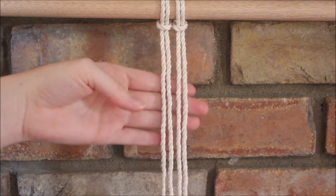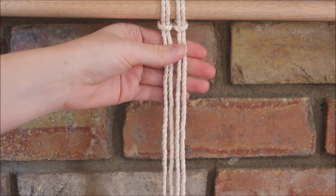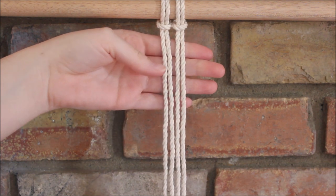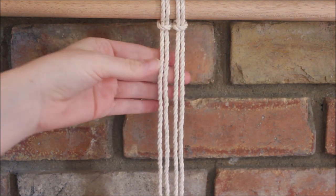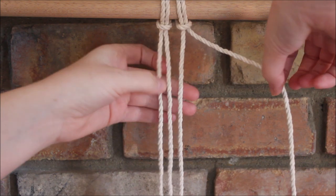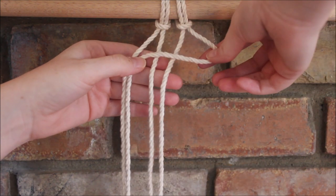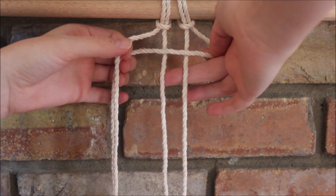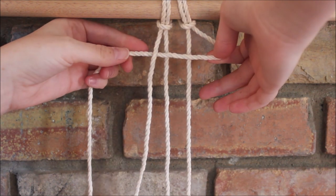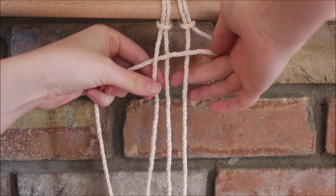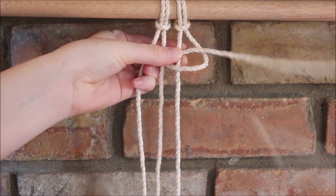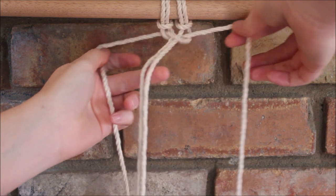To begin, I'm going to attach two ropes to a dowel rod using a lark's head knot. With these, I'm going to tie half of a square knot. To do this, I'm going to take the cord on the far right and cross it over the two cords in the middle to form a loop. Then I'm going to take that string on the far left to go over the right. It goes right behind the two in the middle and up through the loop. And then I pull that nice and tight.